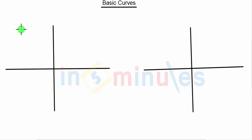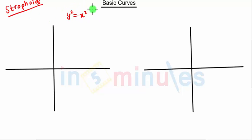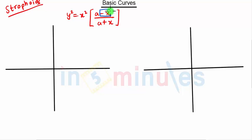Hello everyone, welcome to In Five Minutes. In this video we are going to continue with our basic curves. The next curve is the strophoid. The equation of the strophoid is y² = x²·(a-x)/(a+x). When we have the minus x term in the numerator and plus x term in the denominator, this curve will open towards the negative x-axis.